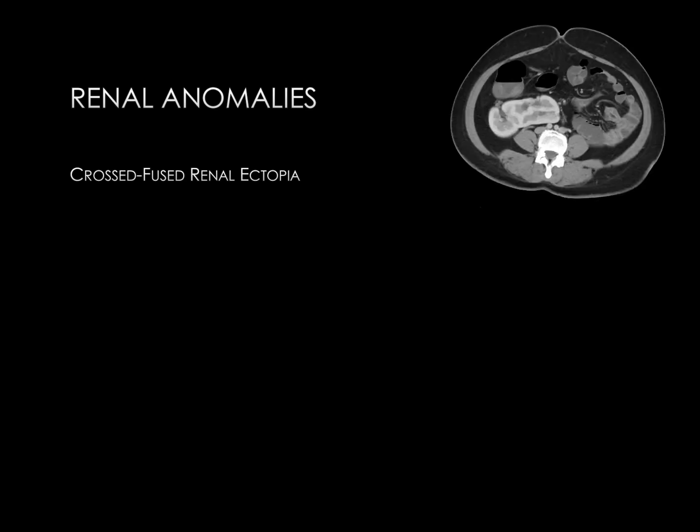The next renal anomaly is crossed fused renal ectopia. The name really says it all in this case. Renal ectopia refers to the kidney in the incorrect location, and crossed fused describes that one kidney has crossed to the other side and fused with the other kidney. The image in the right upper aspect of the slide demonstrates two kidneys fused together in the right mid-abdomen.